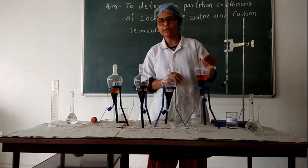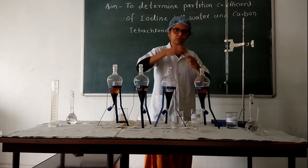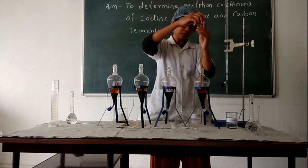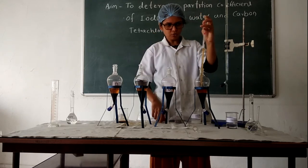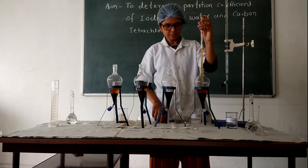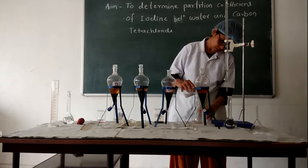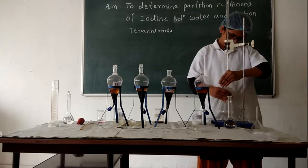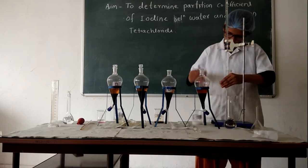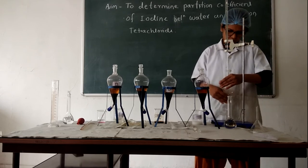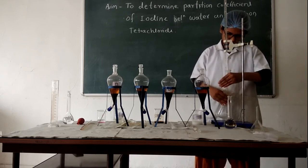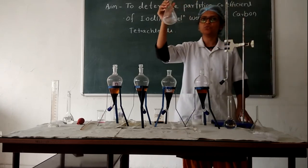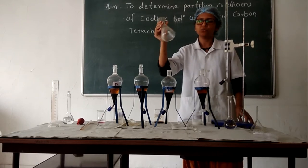Remove the aqueous layer with the help of a pipette and titrate it against 0.01 normal sodium thiosulphate. Add starch indicator into the aqueous layer and titrate against 0.01 normal sodium thiosulphate. The colored solution is then converted into a colorless form, indicating the endpoint.